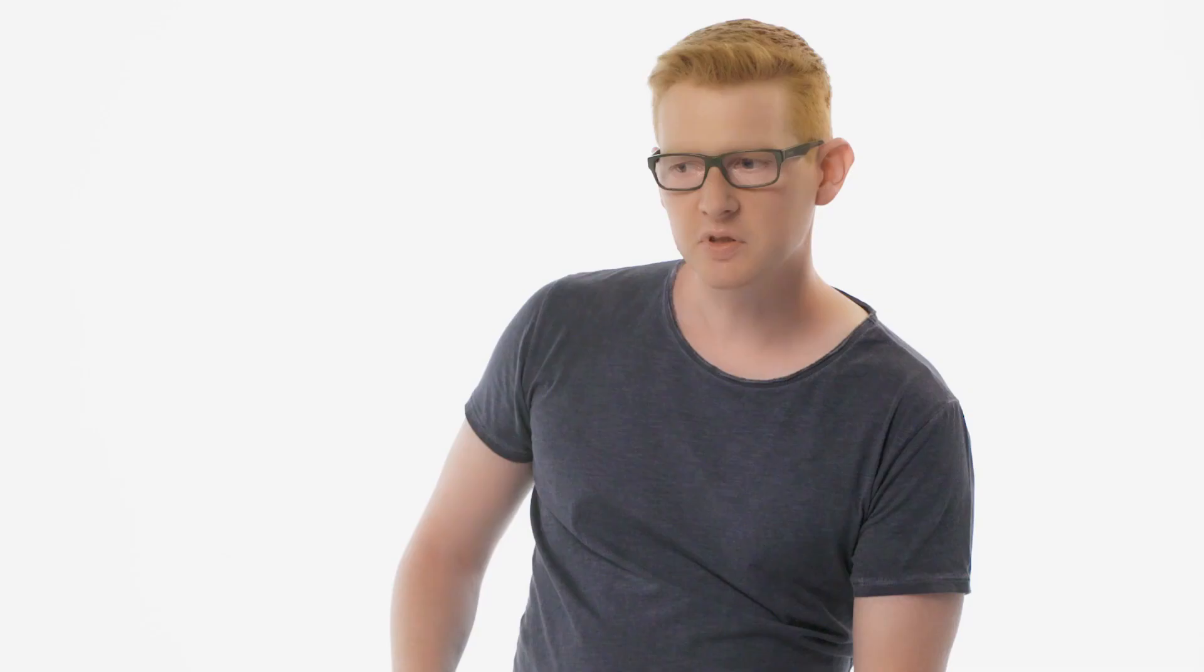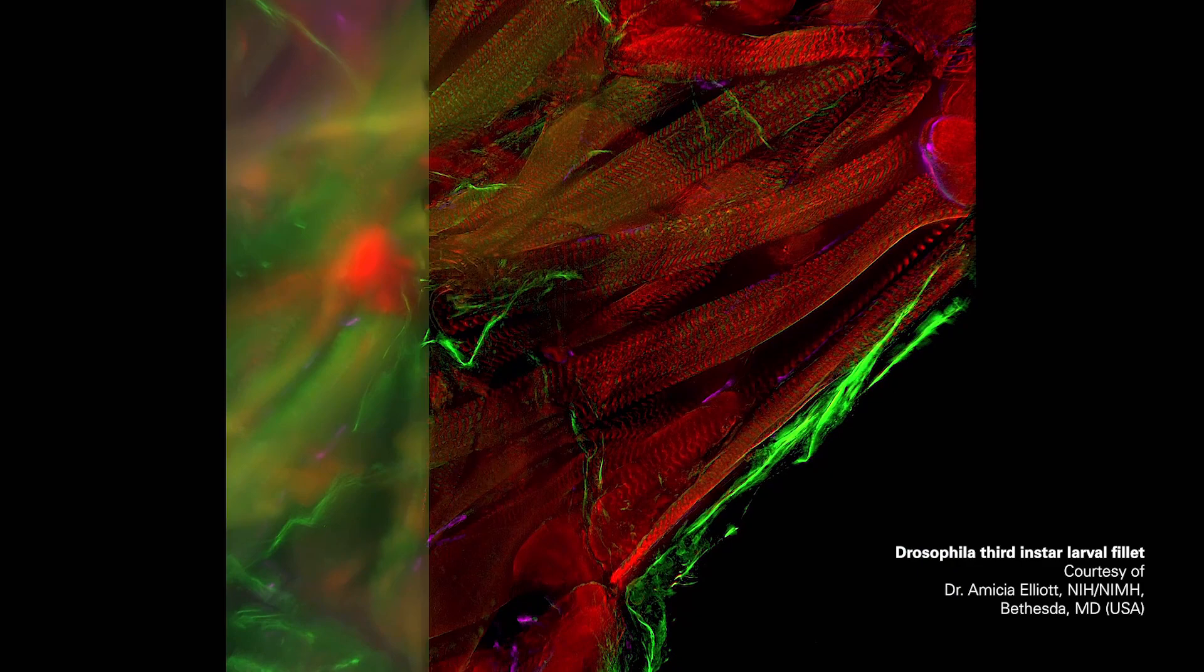And the best thing is that it works already on a single plane. With the Thunder imager what you get is on-the-fly removal of out-of-focus blur, so superb axial resolution and ultrafine morphology is just one click away.